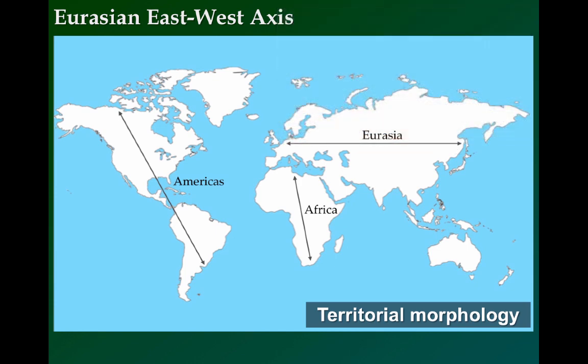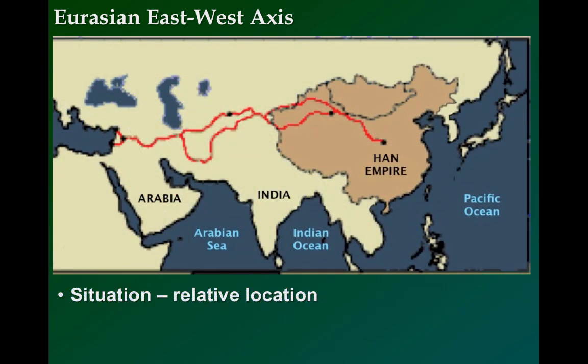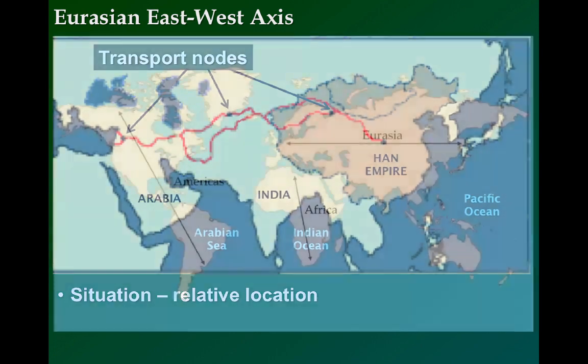Because places along similar lines of latitude have the same length of day and often similar climates, the first urban hearths were usually in great situations, meaning they possessed favorable relative locations with respect to other places. The largest cities were often located along transport nodes, or intersections of two or more lines of transportation, such as roads, rivers, and oceans.